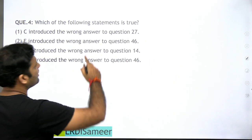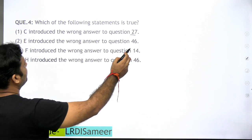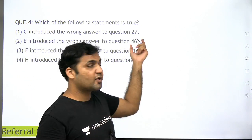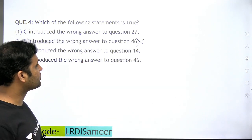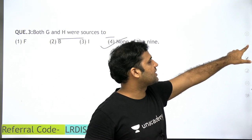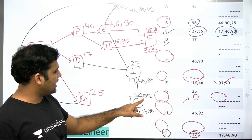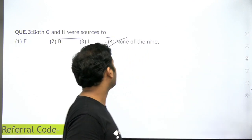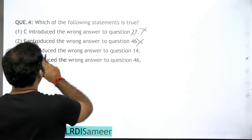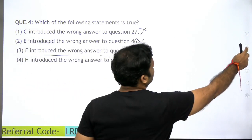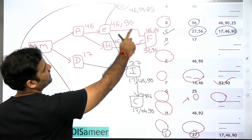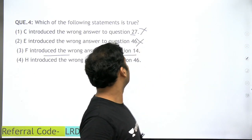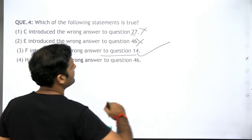Next question: which of the following statements is true? First: C introduced the wrong answer to question 27 — let's check. C did not introduce 27; 27 came to C from I. C introduced question 56 as wrong. So the first statement is wrong. Second: A introduced wrong answer to question 46 — yes, that's correct in our solution but let's check the options. Third: F introduced the wrong answer to question number 14 — let's check. F got 46 from behind, and introduced 14 as wrong themselves. So this statement is correct. Option C is the correct answer.